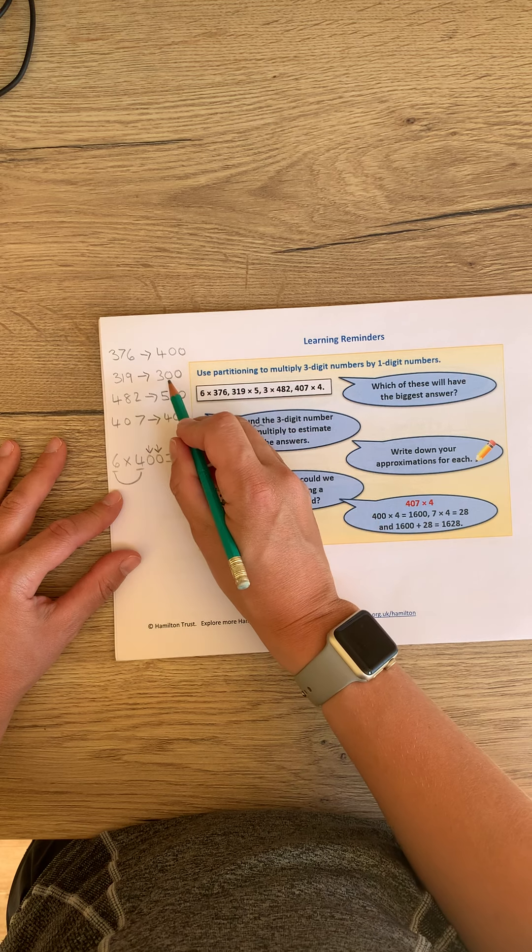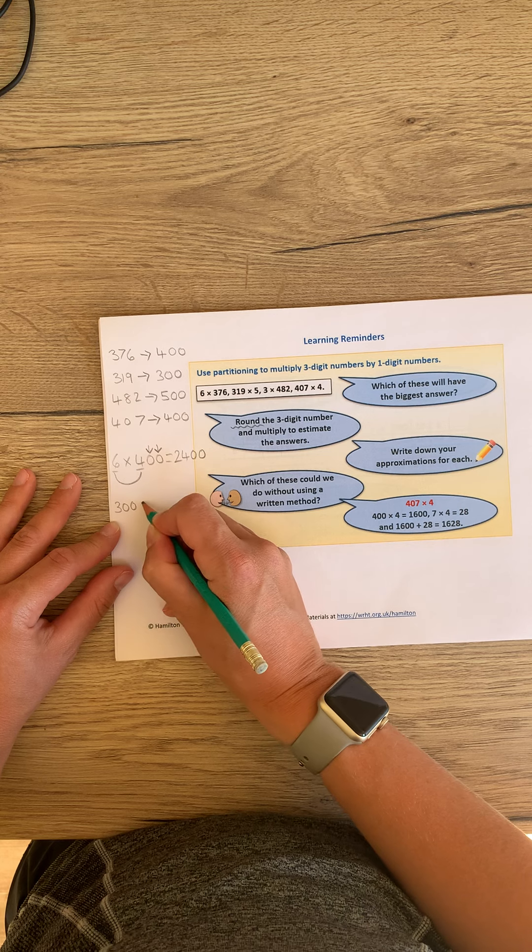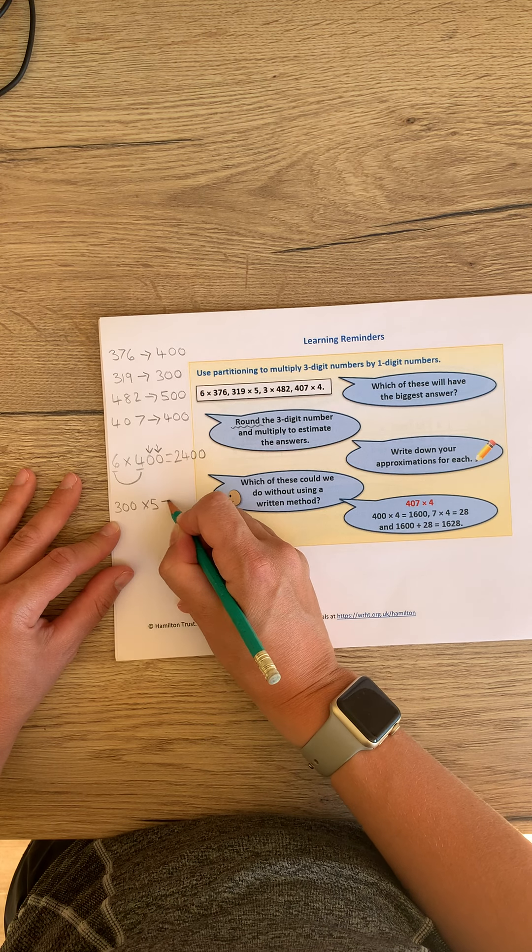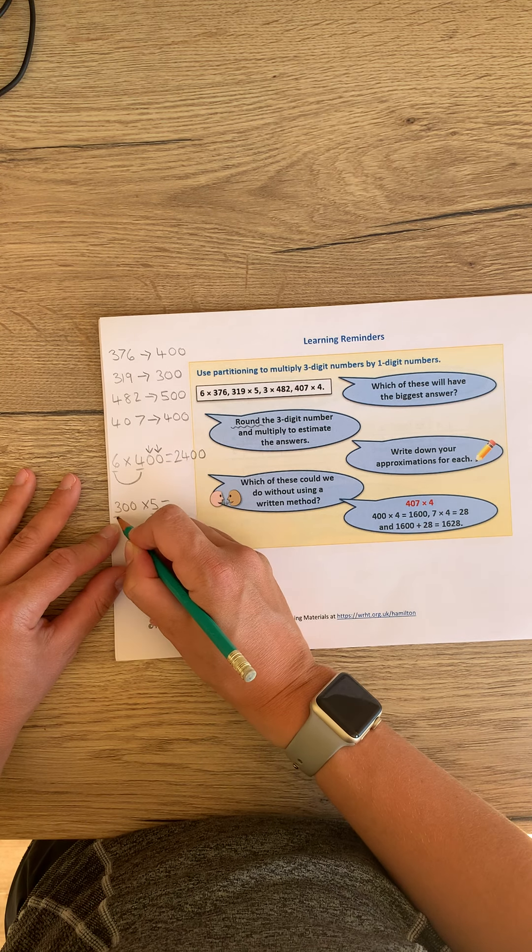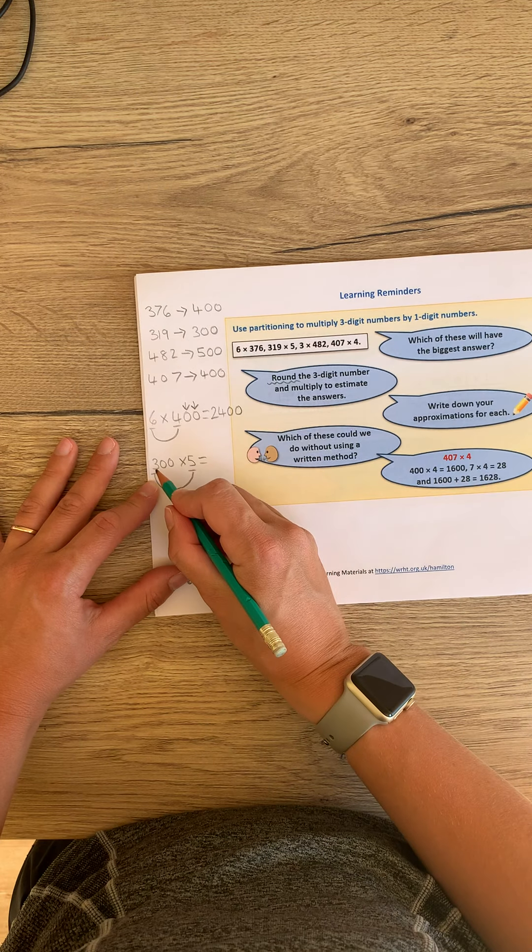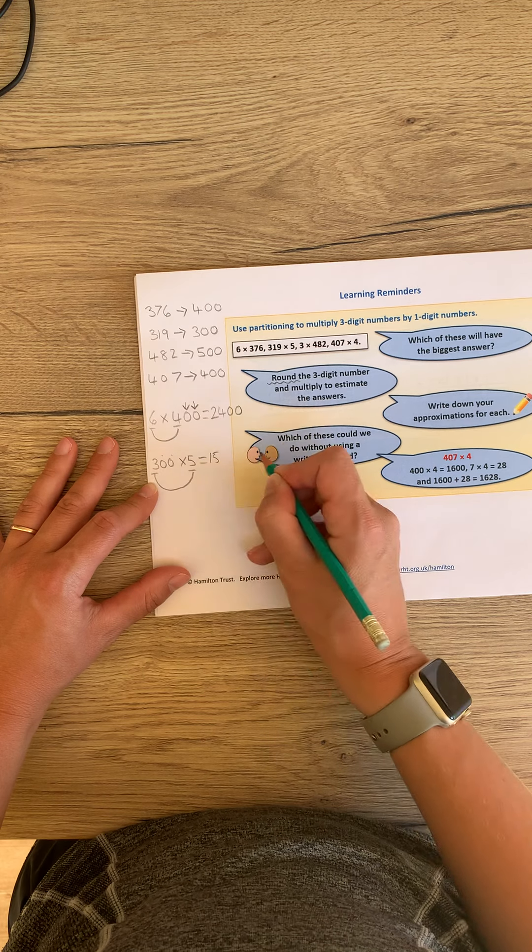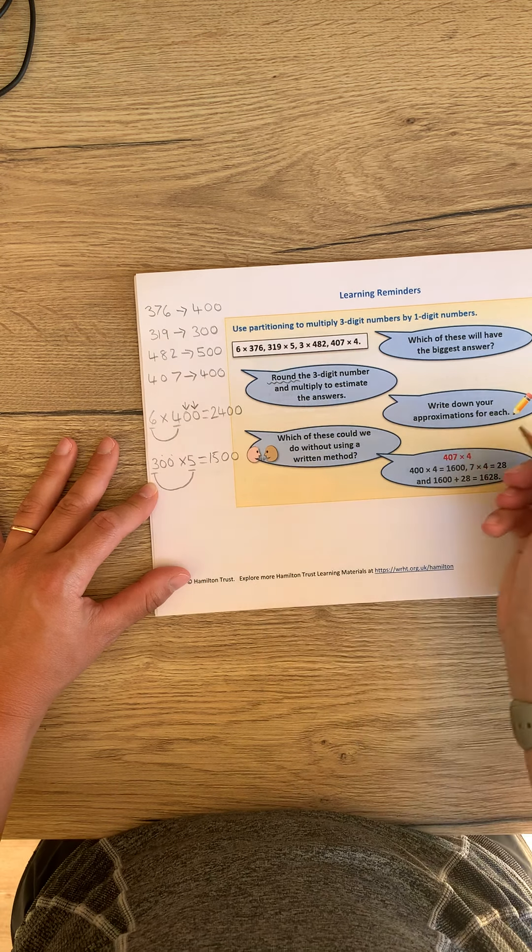319, we know it's rounded to 300 multiplied by 5. 3 times 100 multiplied by 5. Some of you might be able to do these in your head. Some of you will need to work them out using a pencil and paper. That's not a problem. 3 times 5 is 15, two place value holders like before, 1500. That was our estimation.